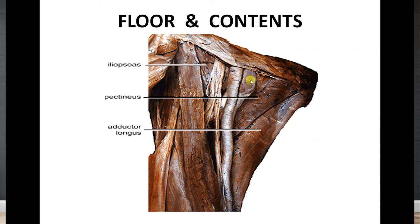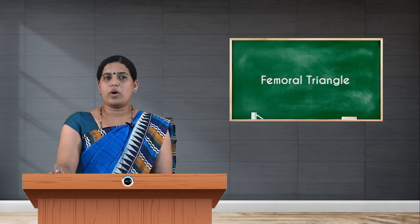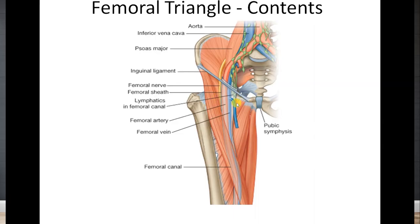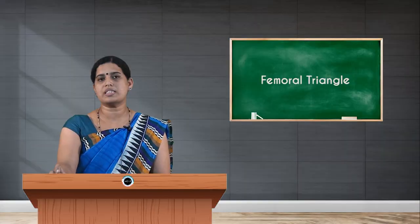These are the three main contents of the femoral triangle. Just beneath the inguinal ligament you can see these three main structures passing in the femoral triangle. The lateral-most content is the femoral nerve, and the femoral vessels are enclosed by the femoral sheath, which appears lighter due to its covering.